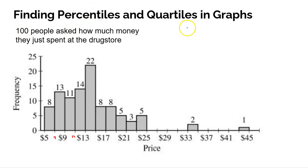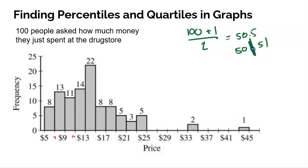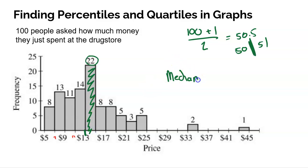Let's find the median. With 100 values, 100 plus 1 divided by 2 gives 50.5 — so I need to find the 50th and 51st values because the median is right in between them. Starting to add up the bins: 8 plus 13 is 21, plus 11 is 32, plus 14 is 46. After the $13 mark I have accumulated 46 values. There are 22 in the next bin, so the 50th and 51st values are both somewhere in that bin. I don't know exactly what the median is, but it falls somewhere between $13 and $15.